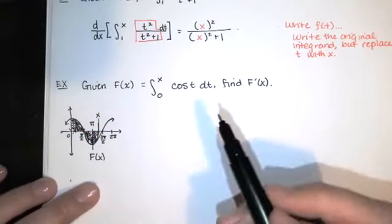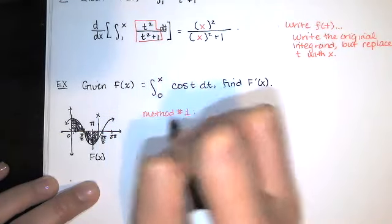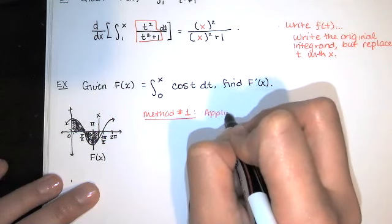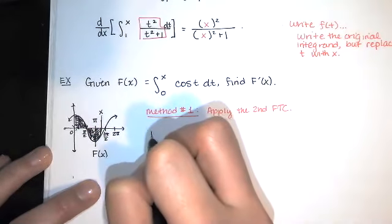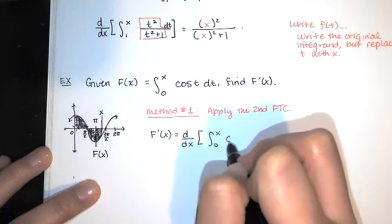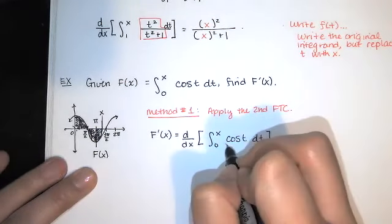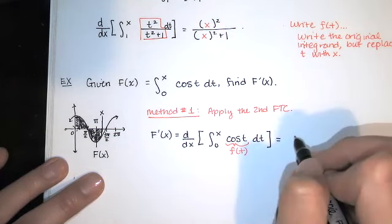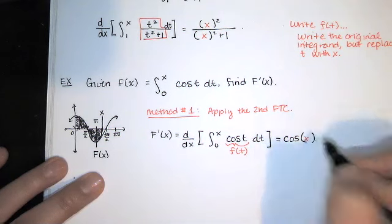Now if I want to find f prime we can do it two ways. Method number one: we just apply the second fundamental theorem of calculus. We say f prime of x is the derivative with respect to x of the integral from 0 to x of cosine of t dt. According to our theorem, we just identify f of t — it's right there — and then replace the t with an x. So we just get cosine of x. That's one way.